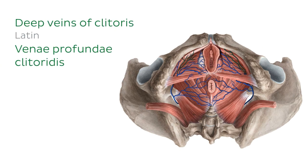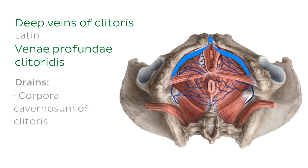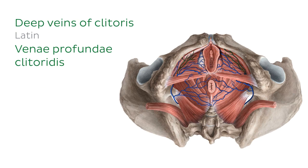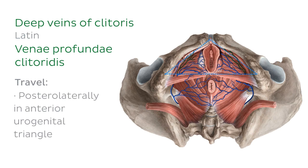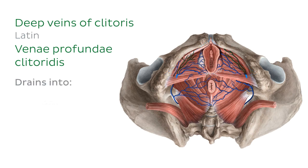The deep veins of the clitoris usually consist of two veins, one on either side, and they drain the corpora cavernosa of the clitoris — the two corpora cavernosa forming the crura or hood of the clitoris. The deep veins of the clitoris travel posterolaterally in the anterior urogenital triangle and drain into the internal pudendal vein.